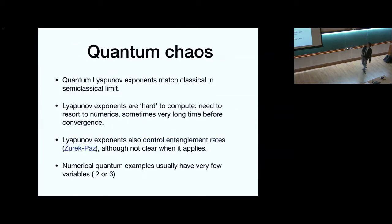You do quantum chaos. Well, you can at least take the semi-classical limit on some small systems and the quantum Lyapunov exponents match the classical physics. But they are hard to compute. If you've ever computed a Lyapunov exponent, you typically have to put it on a computer and wait a very long time before you get an answer. And now, if you have the quantum on top of that, quantum and long time don't talk together well. They also control entanglement rates because of the work of Sekino-Susskind, although it's not clear when they actually apply these ideas. And numerical quantum examples usually have two variables.